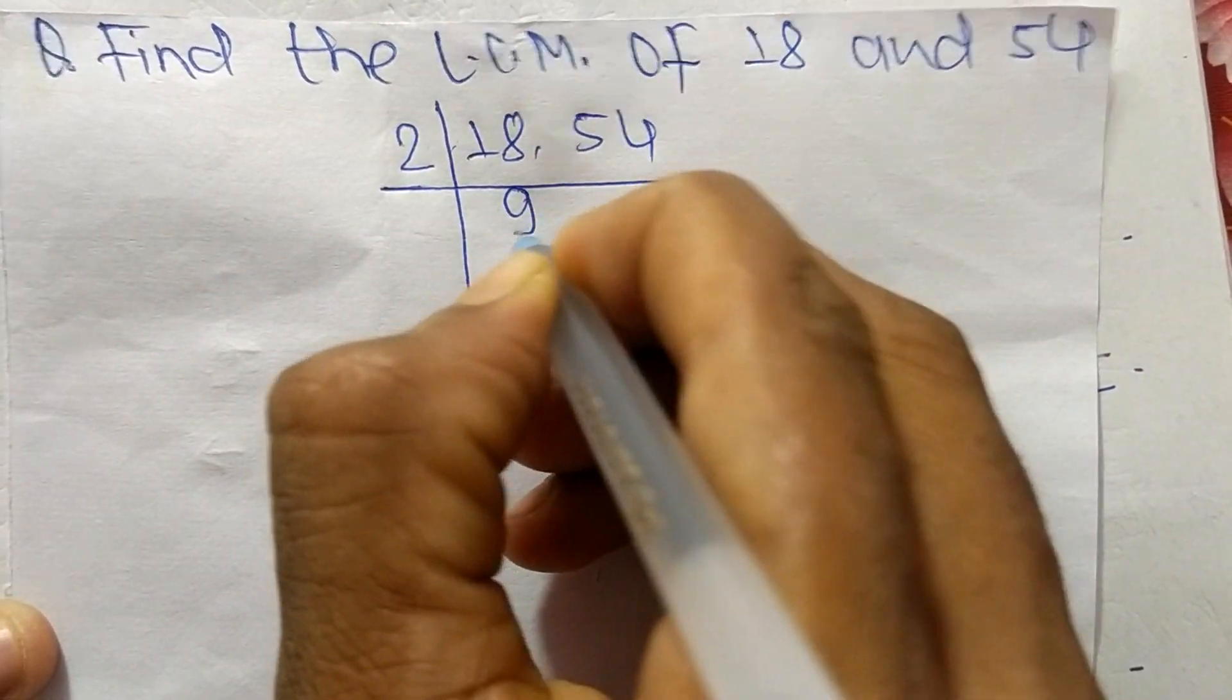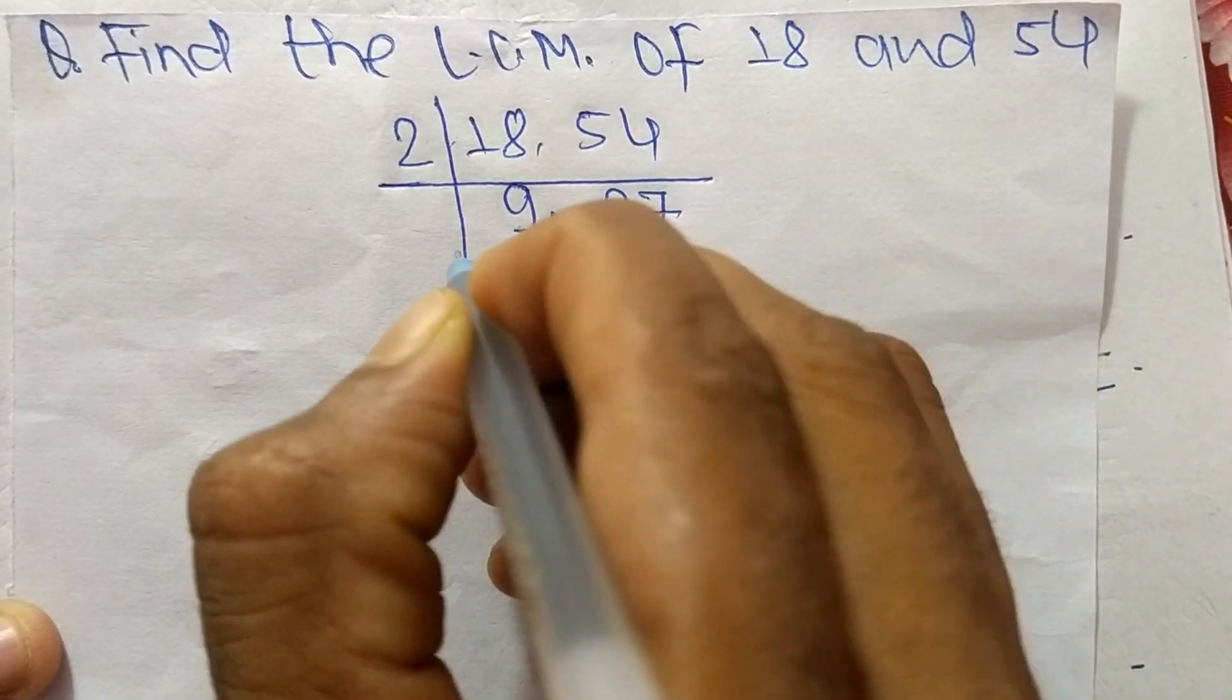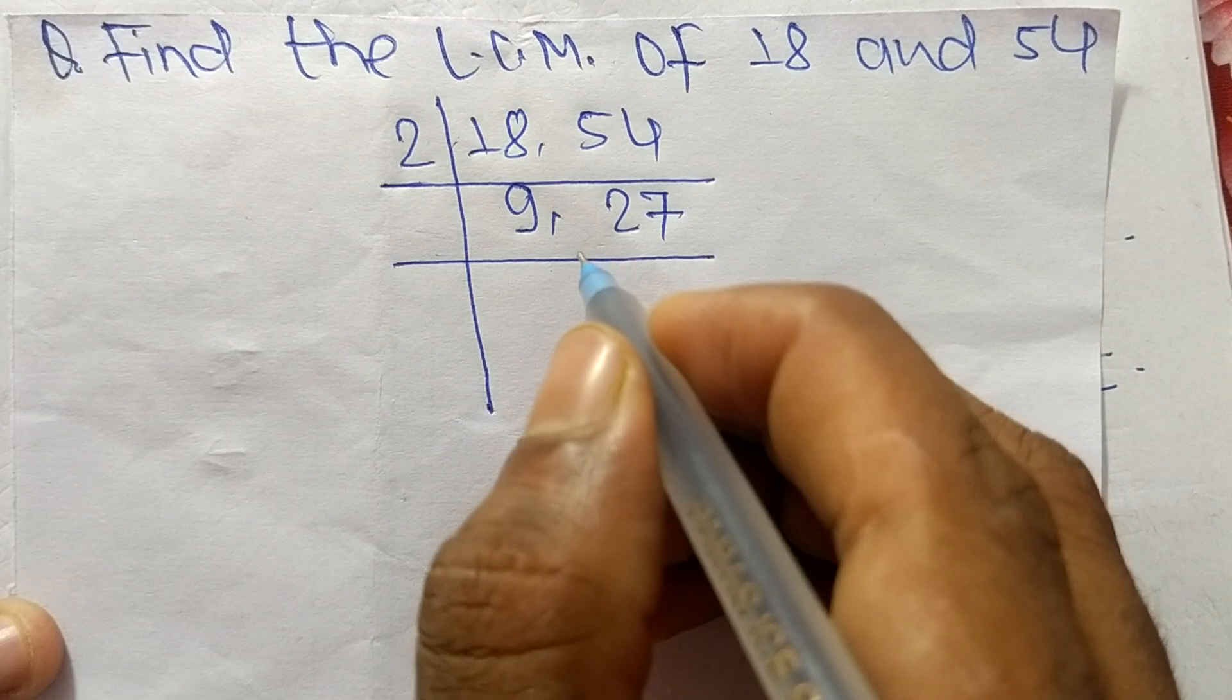2 times 9 means 18, 2 times 27 means 54. So now these numbers are not exactly divisible by 2.